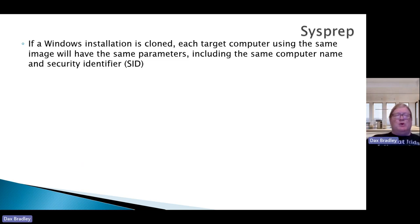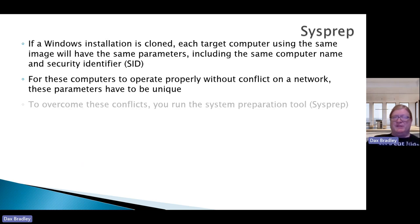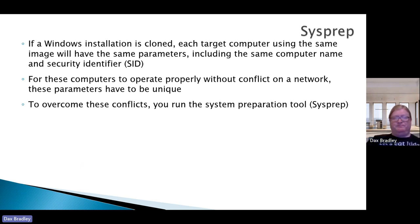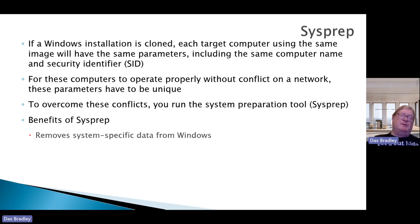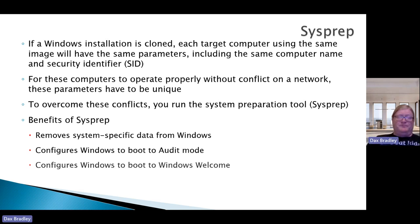Let's talk about SysPrep. If a Windows installation is cloned, each target computer using the same image will have the same parameters, including the same computer name and security identifier. For these computers to operate properly without a conflict on the network, each of these parameters have to be unique, so some adjustments must be made. To overcome this, you can use SysPrep. The benefits of SysPrep are: it removes any system-specific data from Windows, it configures Windows to boot to audit mode, it configures Windows to boot to Windows Welcome, and it can reset the Windows product activation.